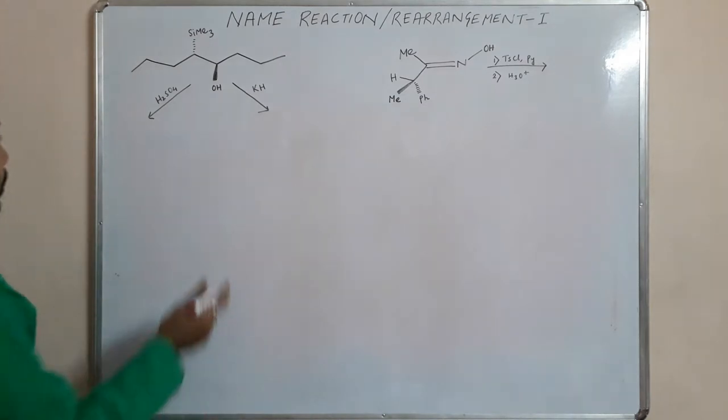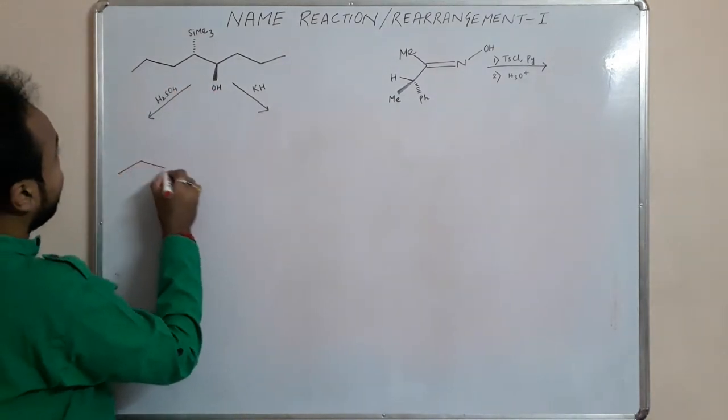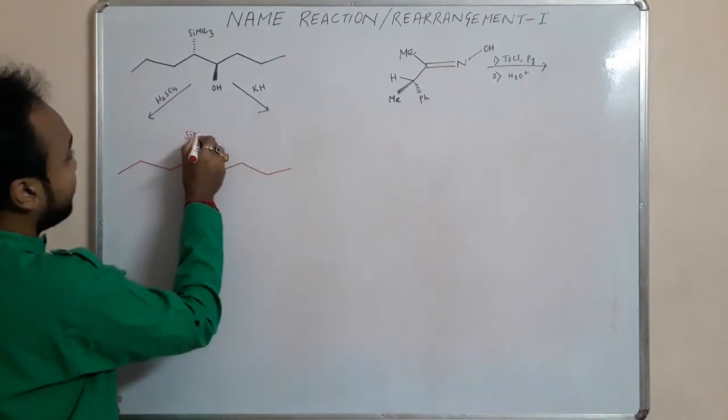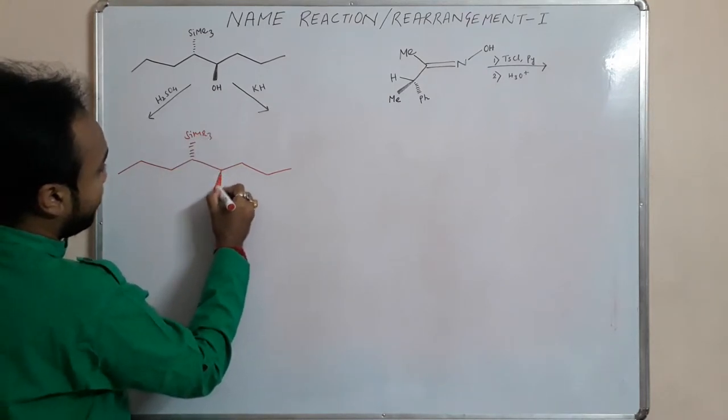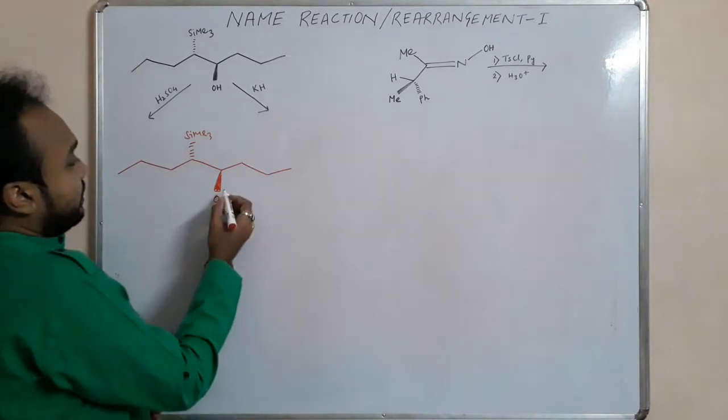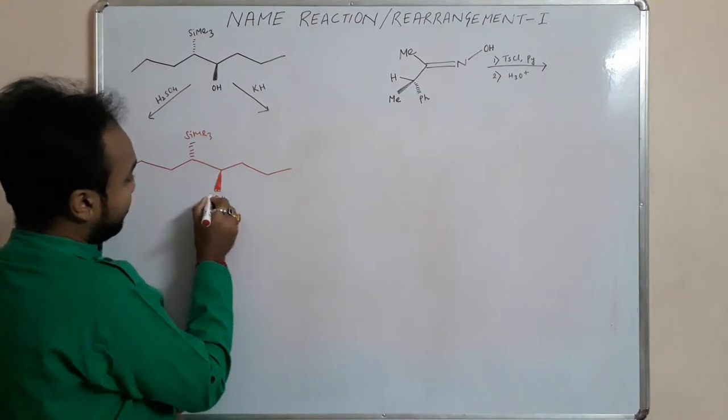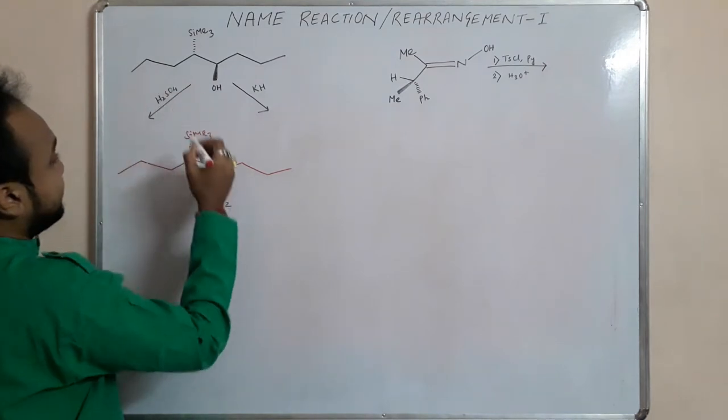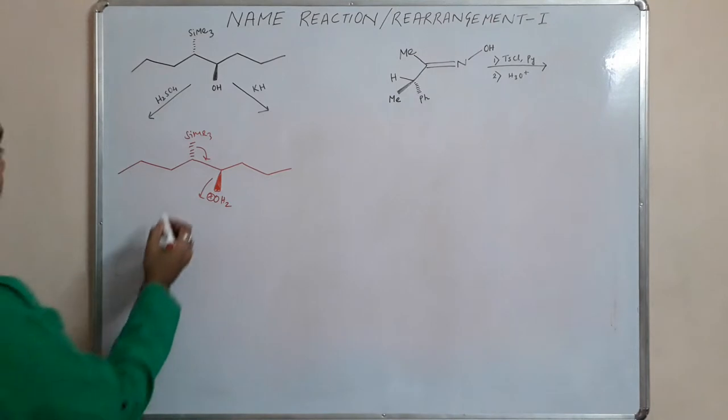So let's start. Here we have a SiMe3 and here we have an OH group. These are anti-periplanar, so in presence of acid it undergoes elimination and we are ending with a trans isomer.